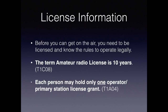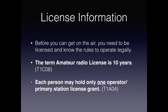Before you can get on the air, you need to be licensed and know the rules to operate legally. The term of an amateur radio license is 10 years, and each person may only hold one operator or primary station license grant at a time. The FCC has moved into the digital age, which means printed copies of the license are no longer required and you don't have to display one at your station. Proof of the license is when it appears in the FCC ULS Consolidated License Database online. Before the course is over, I'll show you how to access that information.